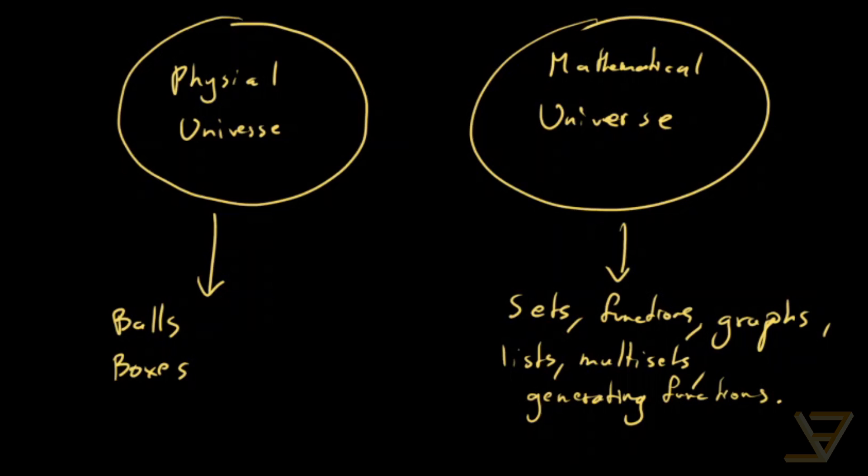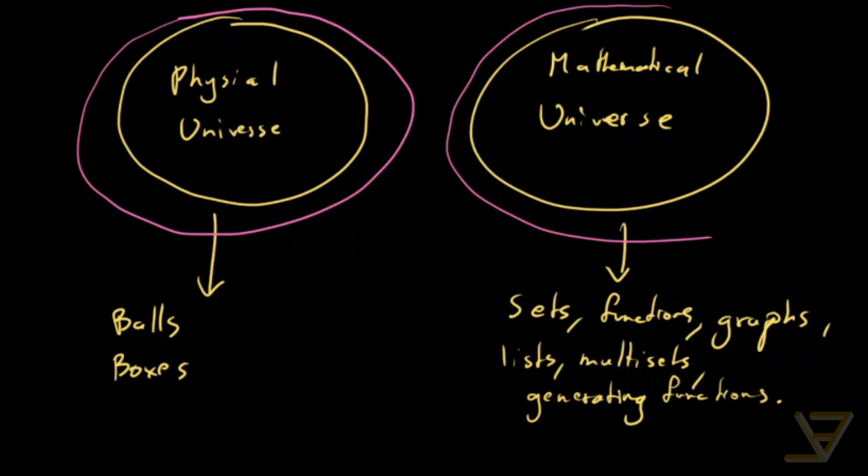And usually when we study combinatorics at first, we act as if the objects of study are in the physical universe. But really, we're dealing with finite set theory, which means we're working with the mathematical universe.